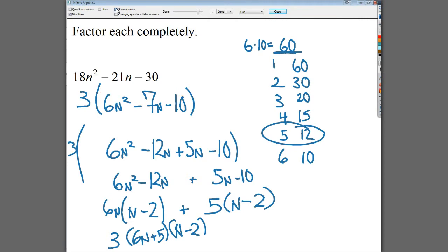So the big issue there is just to make sure that the sign on your numbers works out. So this part should make negative seven. If I put plus 12 and minus five here, it would have given me positive seven and I don't want that.